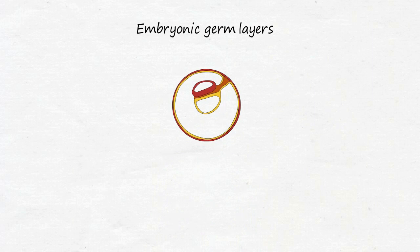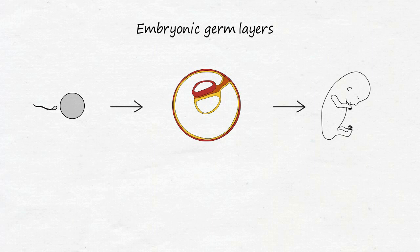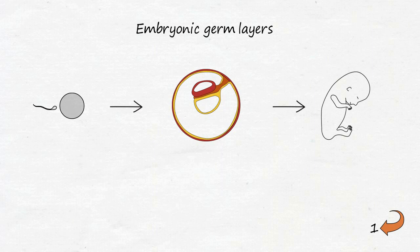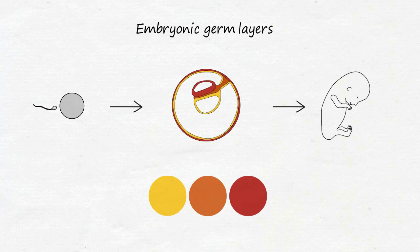Embryonic germ layers are the first differentiating cell layers of precursors of an embryo, from which develop the organ systems and finally the complete organs. These germ layers are therefore the basic tissue types of the human body.